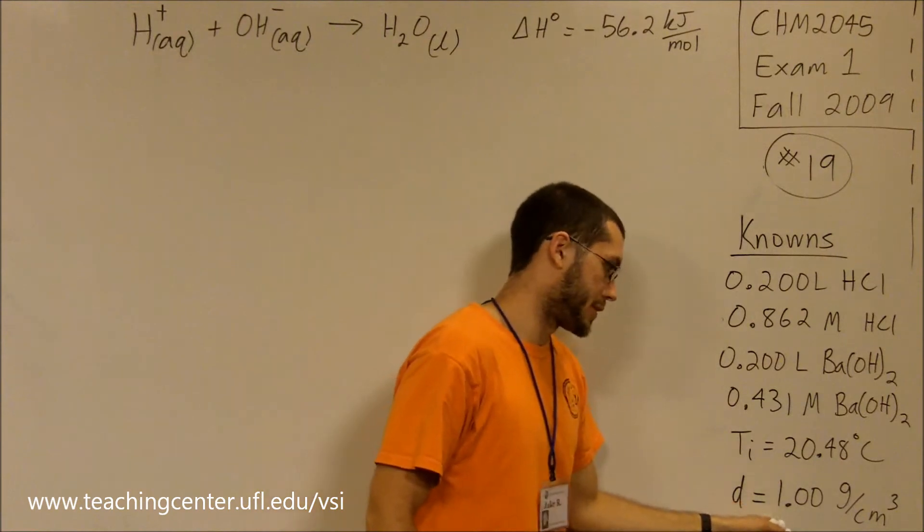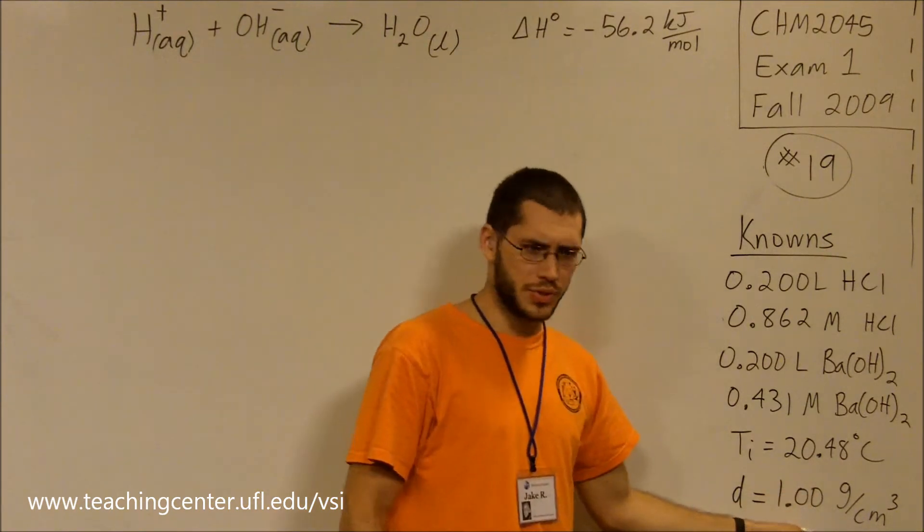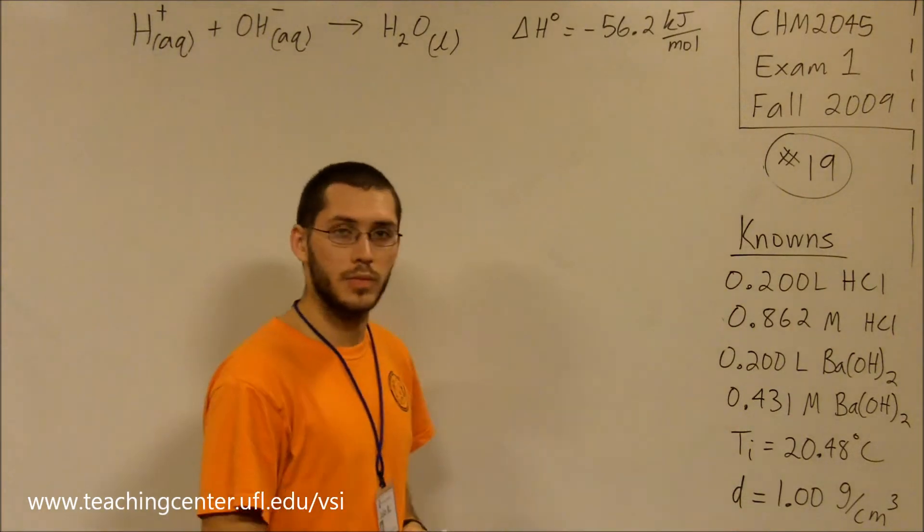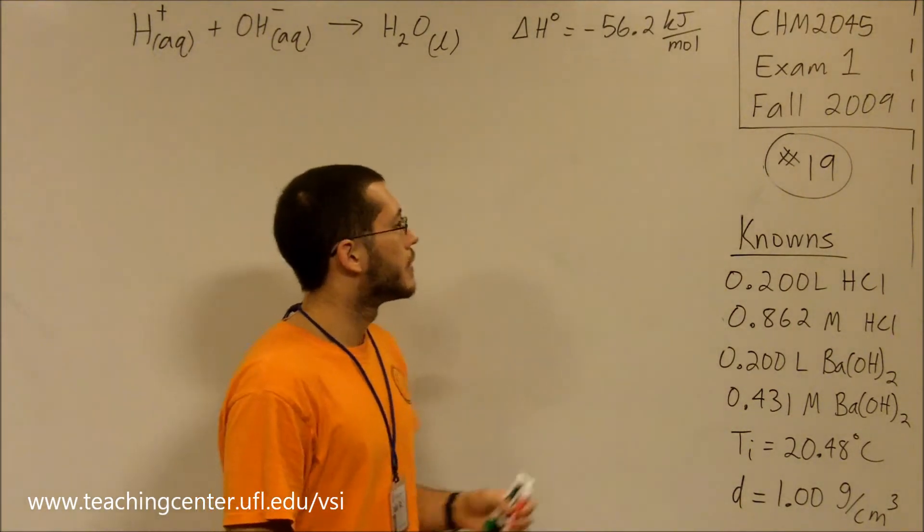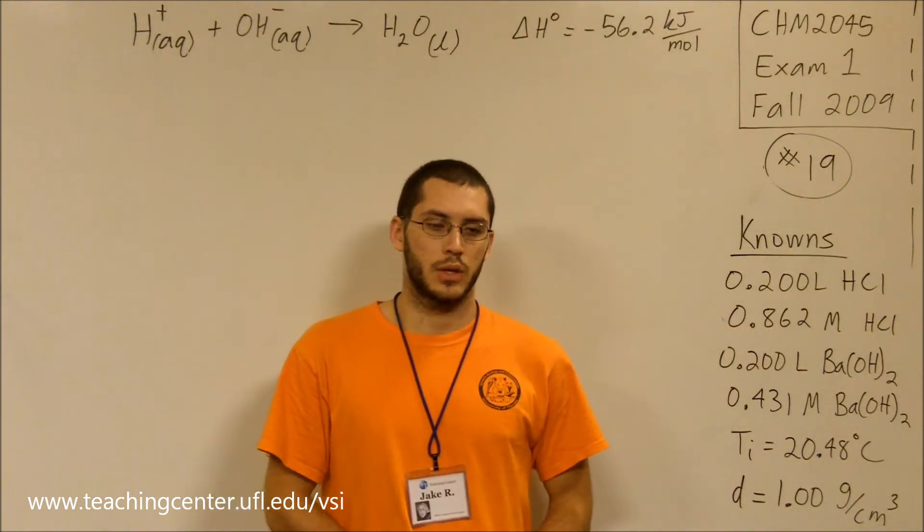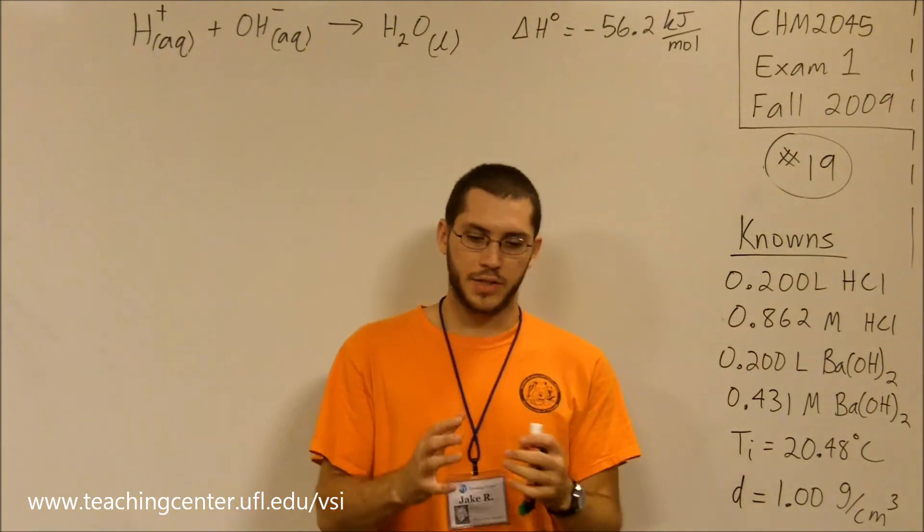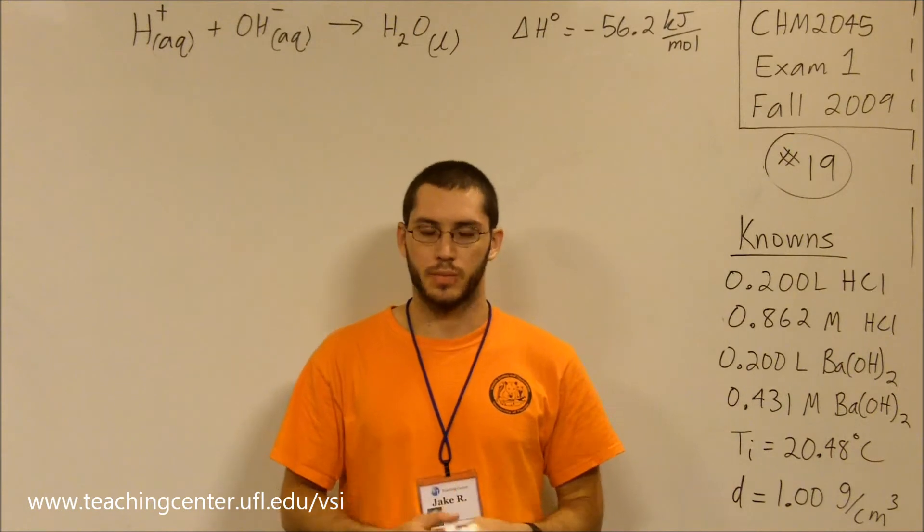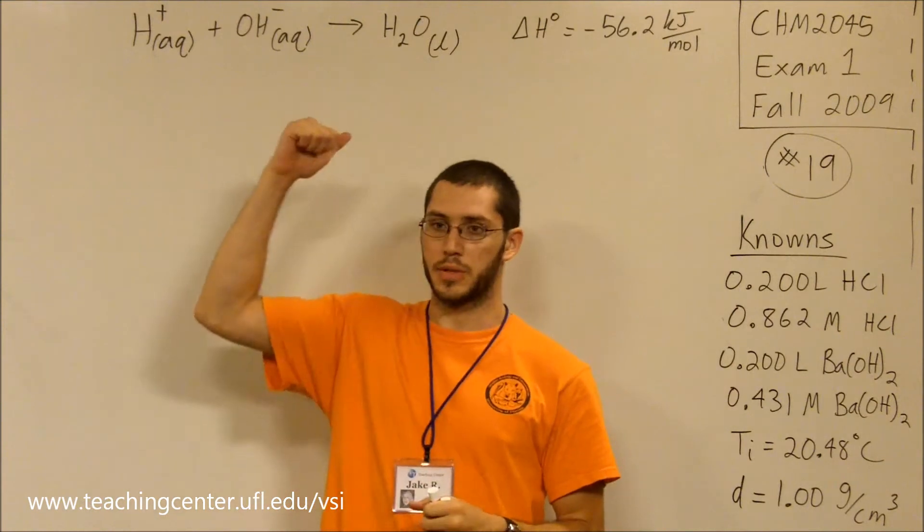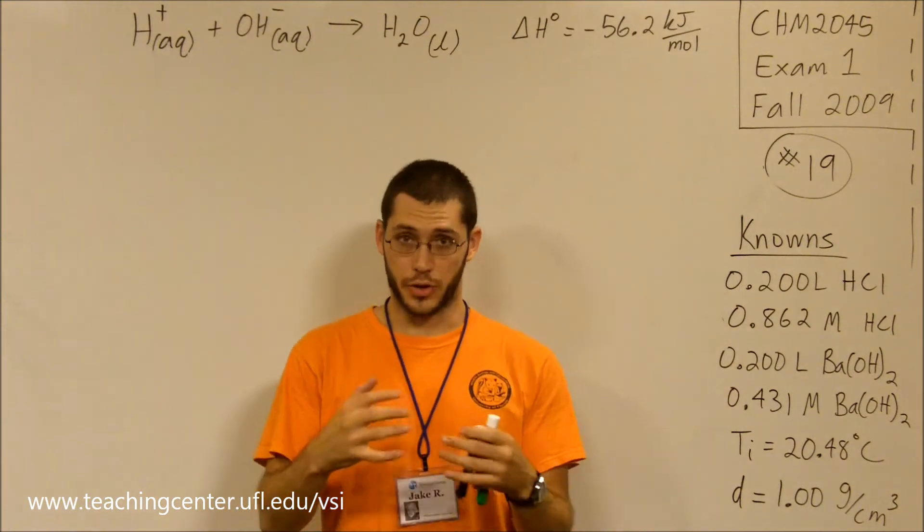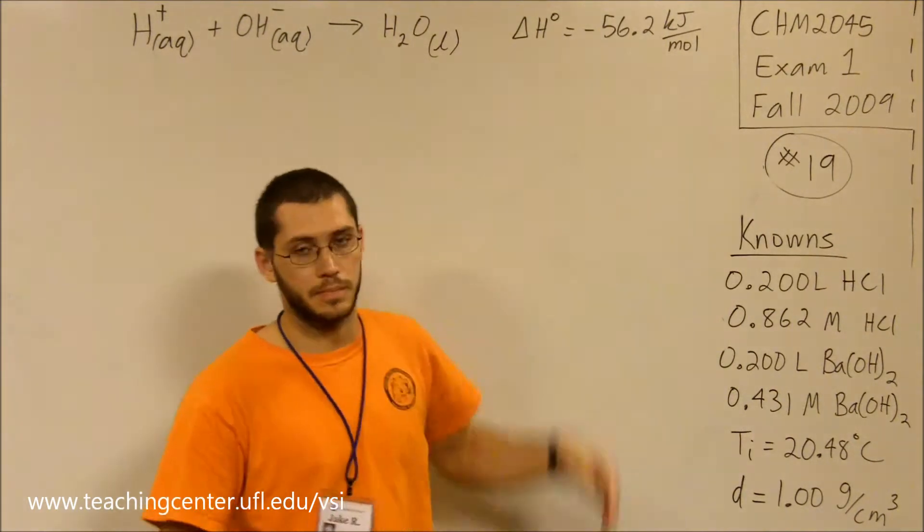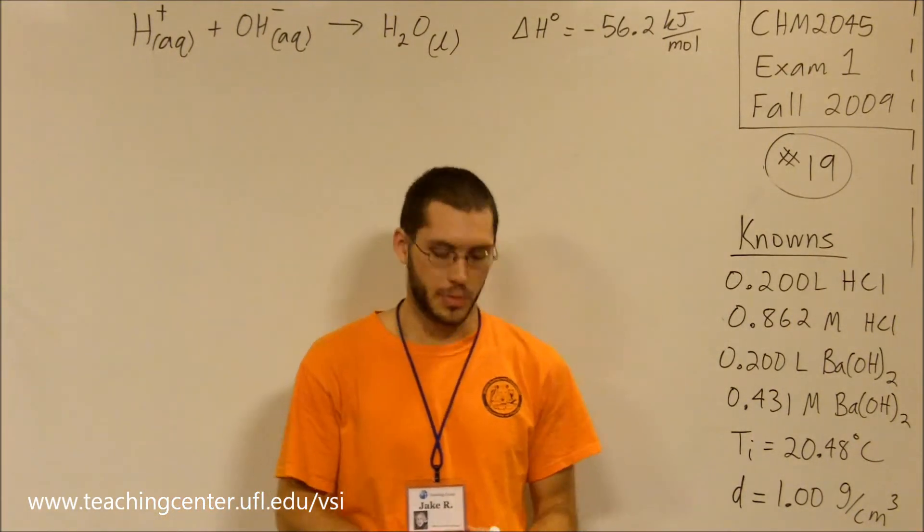The question also says that the density of both solutions is 1.00 grams per cubic centimeter. It asks, what is the final temperature of the solution? So we're mixing two reagents together, and the chemical reaction occurs and releases heat, indicated by a negative sign. What is that final temperature?